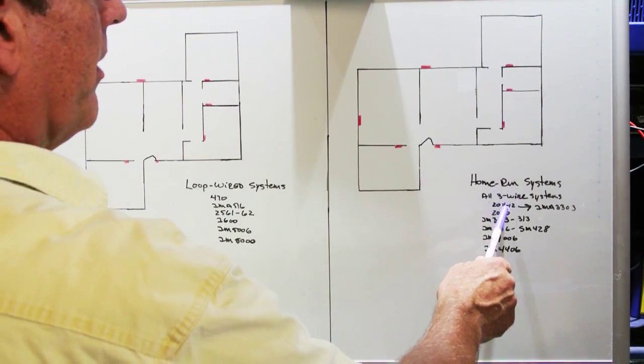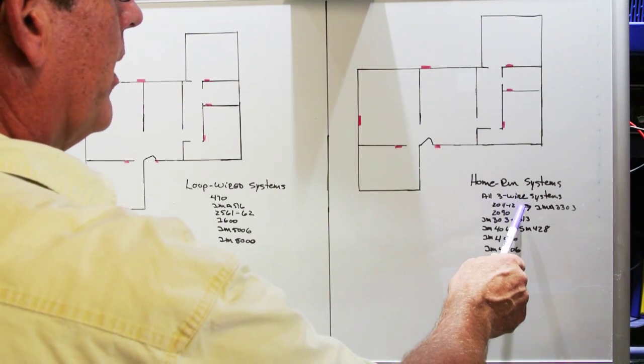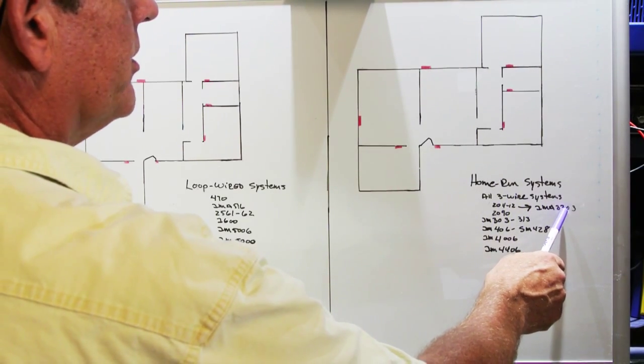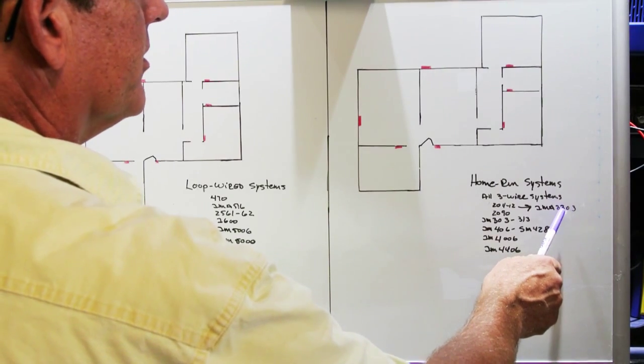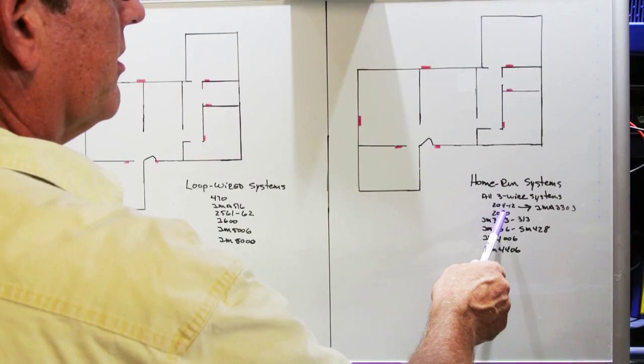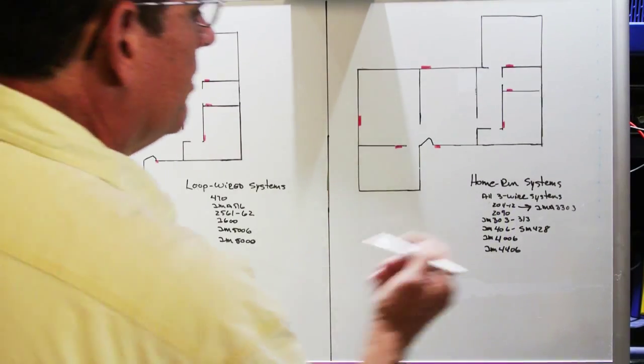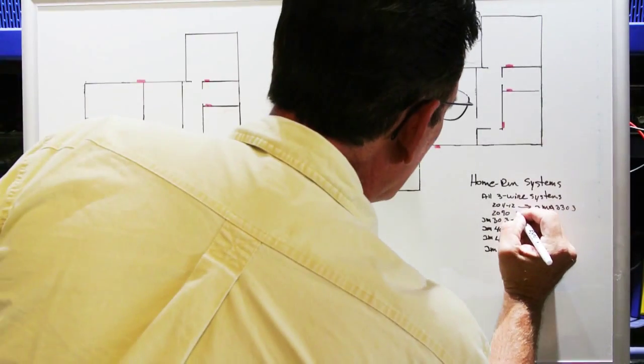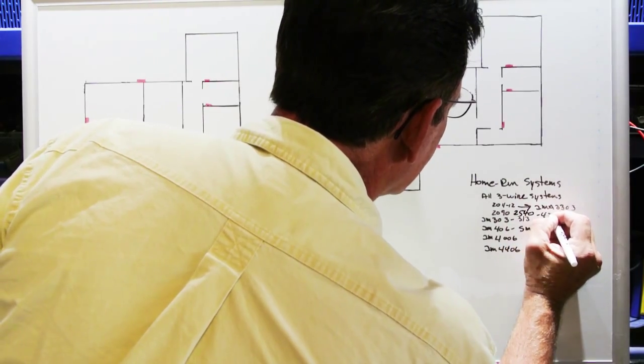And three wire system home run systems go all the way up through the very last true Nutone intercom system, three wire system, which is the IMA 3303. They include models like the 2090, the 2540 and 42.